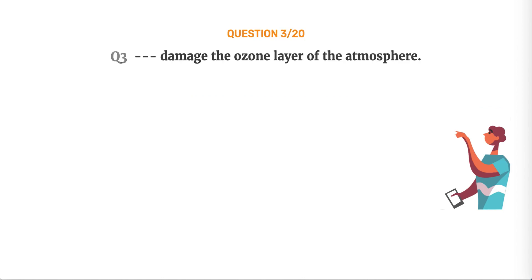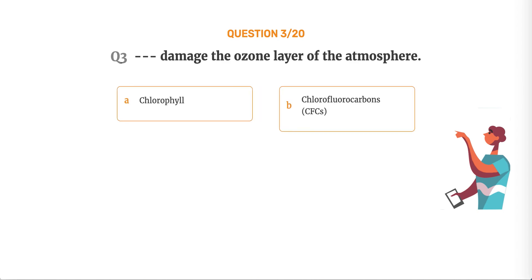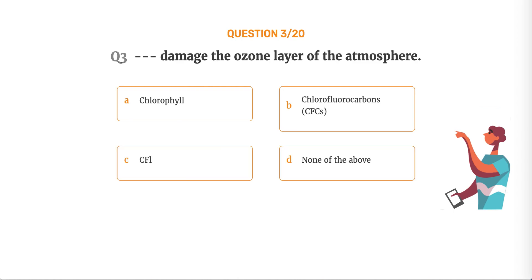Question number 3. Dash damages the ozone layer of the atmosphere. Option A, Chlorophyll. Option B, Chlorofluorocarbons, CFCs. Option C, CFL. Option D, None of the above.